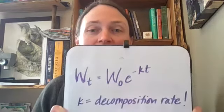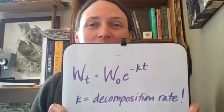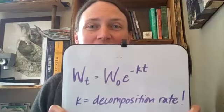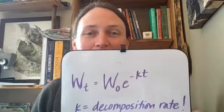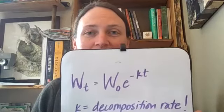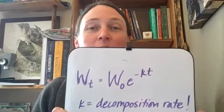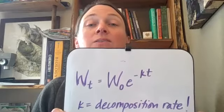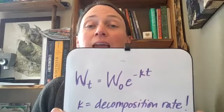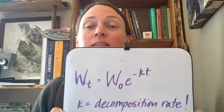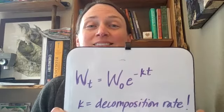And K is called the decomposition rate. So when I'm interested in looking at leaf litter decomposition, I use the exponential decay model to calculate the decomposition rate.